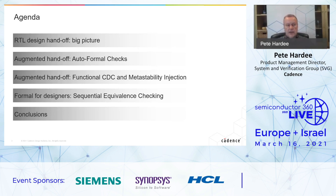Then we'll look quickly at a formal technique that can be very easily adopted by designers: sequential equivalence checking. And we'll conclude with some takeaways and customer success examples.